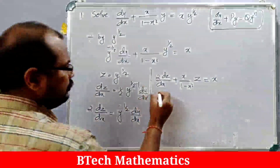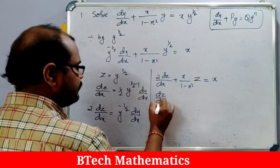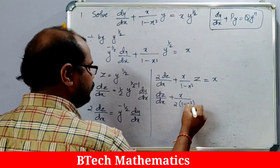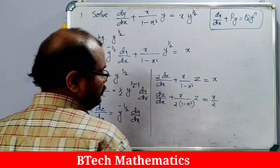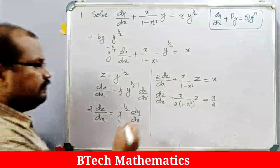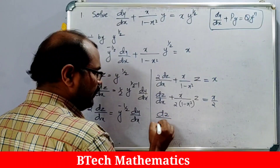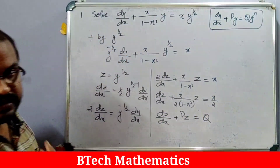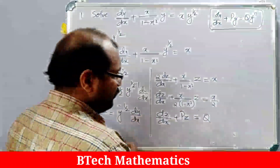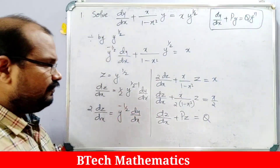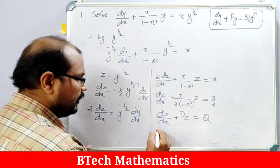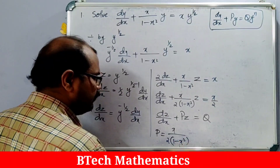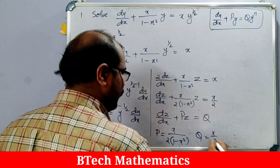Dividing by 2, we get: dz/dx + x/(2(1-x²))·z = x/2. This is now a linear differential equation of the form dz/dx + Pz = Q, where the dependent variable is z and the independent variable is x. Here P = x/(2(1-x²)) and Q = x/2.